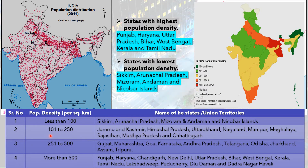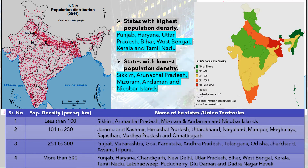Population density between 101 to 250 per square kilometer, colored in light green on the map, includes: Jammu and Kashmir, Himachal Pradesh, Uttarakhand, Nagaland, Manipur, Meghalaya, Rajasthan, Madhya Pradesh and Chhattisgarh. Population density between 251 to 500 per square kilometer, colored in yellow, includes: Gujarat, Maharashtra, Goa, Karnataka, Andhra Pradesh, Telangana, Odisha, Jharkhand, Assam and Tripura.